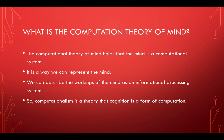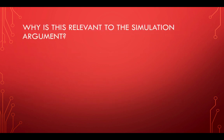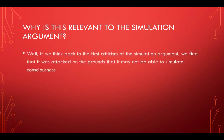And if our brains work like a computer, how is this really relevant to the simulation argument? If we think back to the first criticism of the simulation argument, we find that it was attacked on the grounds that it may not be able to simulate consciousness. That was the main criticism — it suggested that the idea of a simulation indistinguishable from the real world is actually impossible because a computer cannot ever simulate consciousness.